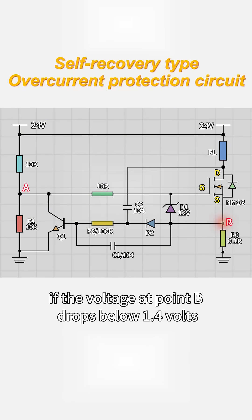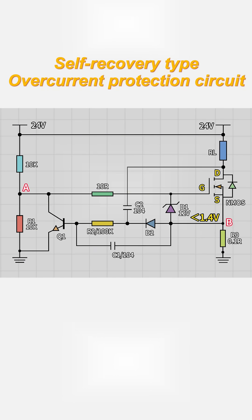After conducting, if the voltage at point B drops below 1.4V, it resumes normal operation. If it rises above 1.4V, it turns off again. It's a simple principle.